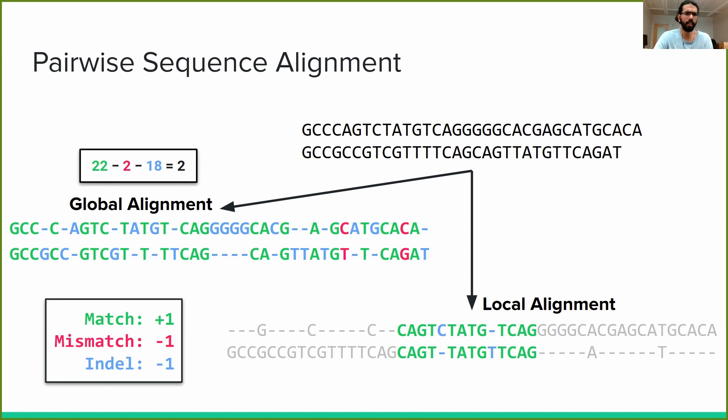On the other hand, our local alignment has 12 matches and two indels, giving us an overall alignment score of 10. Remember that we are ignoring the gray columns here. An optimal local alignment is defined as the maximum scoring alignment among all possible alignments of all possible substrings of the two sequences.